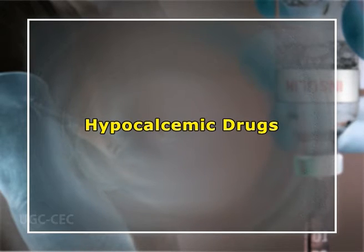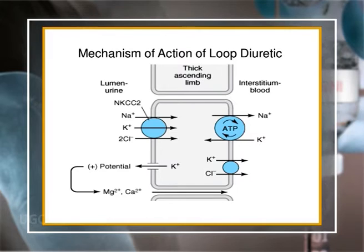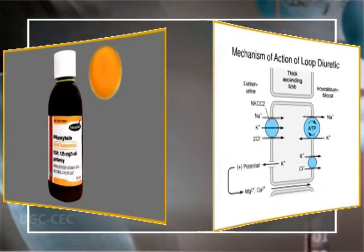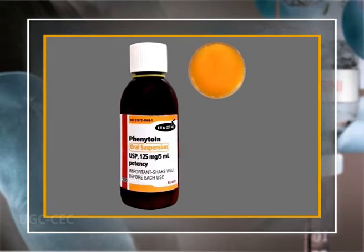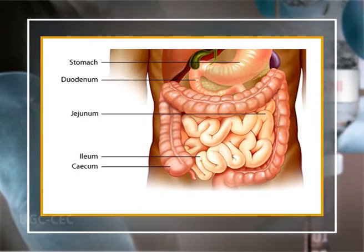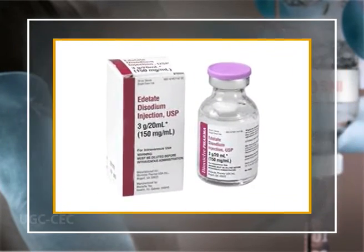A variety of medications can predispose to hypocalcemia. For example, loop diuretics increase renal excretion of calcium, and phenytoin inhibits intestinal absorption of calcium. Phosphate-containing agents bind calcium in the intestinal tract and interfere with its absorption. Edetate disodium is a chelating agent used in the treatment of toxic metal poisoning.